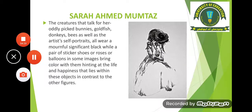In another work by the same artist, there is a goldfish and she has amalgamated — made a combination of — a female figure with a goldfish, which also looks creepy at times and haunting at times, but still there is beauty in her idea. The creatures she picks — bunnies, goldfish, donkeys, bees — as well as the artist's self-portraits, all wear a mournful significant black, while pairs of sticker shoes, roses, or balloons in some images bring color, hinting at life and happiness in contrast to the other figures.